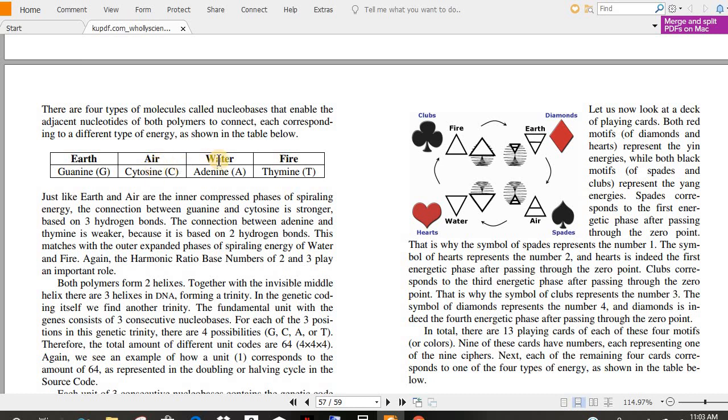There are four types of molecules called nucleobases that enable the adjacent nucleotides of both polymers to connect, each corresponding to a different type of energy, as shown in the table below. Earth, air, water, fire, guanine, cytosine, adenine, and thymine. These are the building blocks of life. Just like earth and air are the inter-compressed phases of spiraling energy, the connection between guanine and cytosine is stronger, based on three hydrogen bonds. The connection between adenine and thymine is weaker because it is based on two hydrogen bonds. This matches with the outer expanded phases of spiraling energy of water and fire. Again, the harmonic ratio-based numbers of two and three play an important role. Amazing.